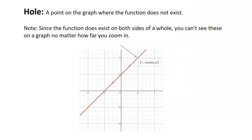So what is a hole? A hole is a point on the graph where the function does not exist. You can see on the graph that there's a hole right here at x equals 2 — there's no y value that corresponds to an x value of 2. I've used a program called Desmos; when I highlight and put my mouse over that point, it shows 2 undefined.